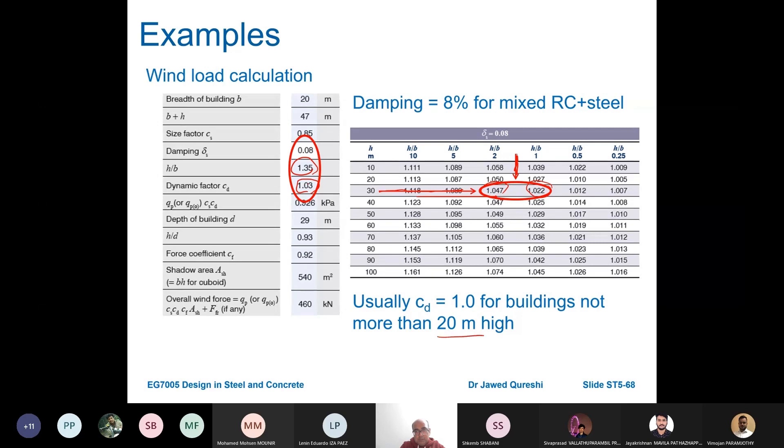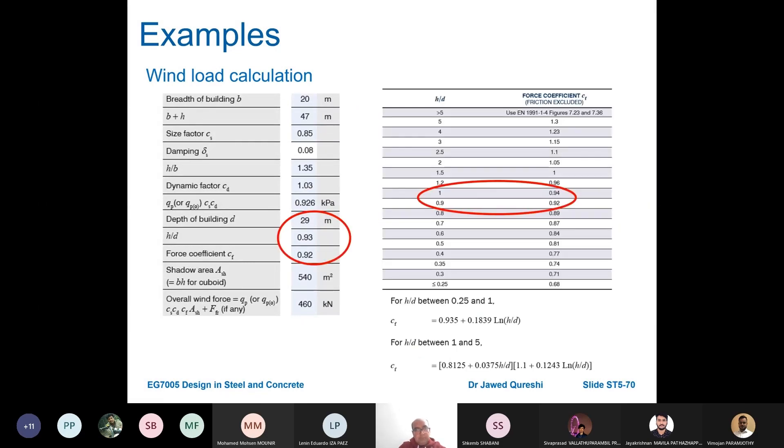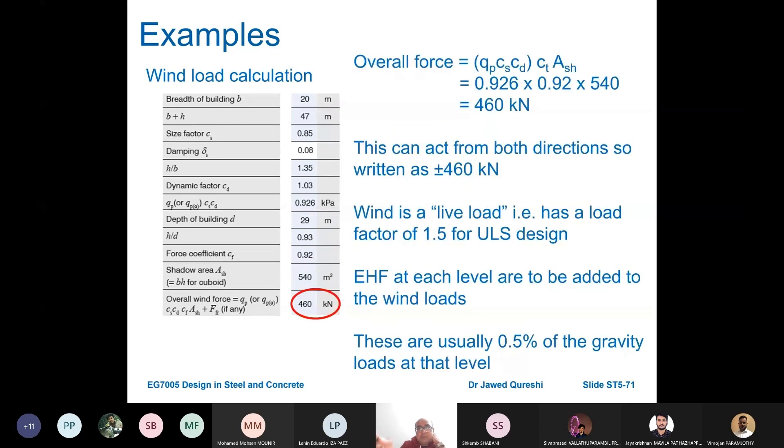Q_p into c_s into c_d gives you a pressure. From previous calculation we found this one, c_s is the size factor and c_d is dynamic factor. Our value comes out to be 0.926 kPa. Depth of building is 29, h over d is 0.93. The force coefficient c_f is found from here which is 0.92. You can use this formula as well to find c_f, it comes out to be 0.92.